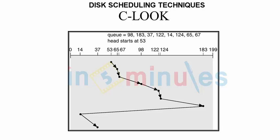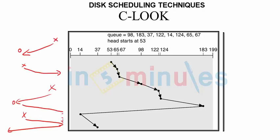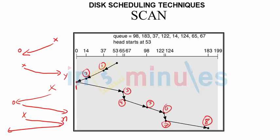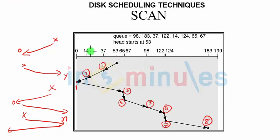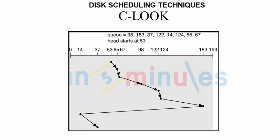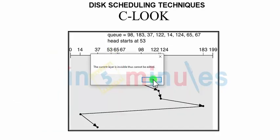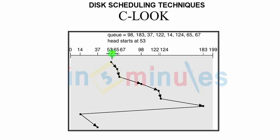For instance, consider the same scenario as we considered for SCAN, where the last request on the right hand side was 183 and on the left was 14. Even in that case it went to 0 and then again came back. But in C-LOOK if we are at 53, we will have first 65 then 67.